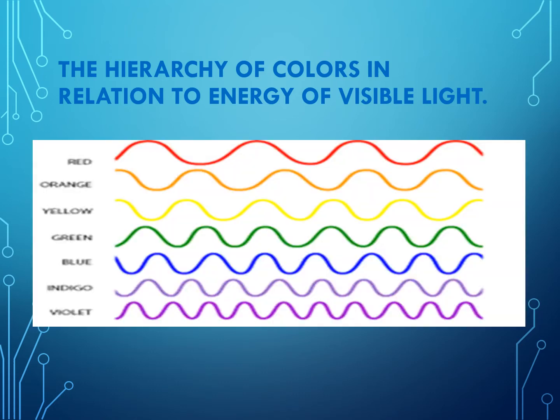Here is an illustration showing the wavelengths of the colors and their representative colors. For example, red has the longest wavelength, and as you can see compared to violet below, violet has the shortest wavelength.